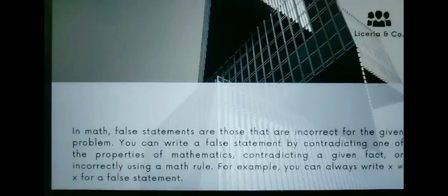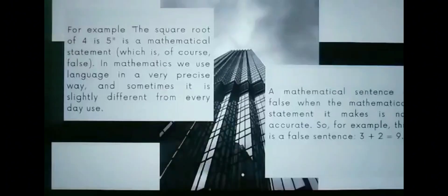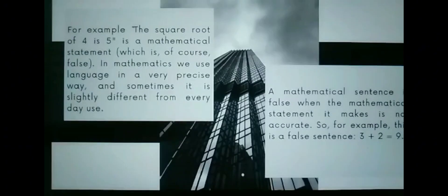For example, you can always write x equals x for a false statement. For example, the square root of 4 equals 5 is a mathematical statement, which is of course false. In mathematics, we use language in a very precise way, and sometimes it is slightly different from everyday use. A mathematical sentence is false when the mathematical statement it makes is not accurate.